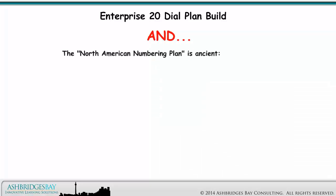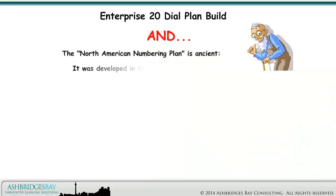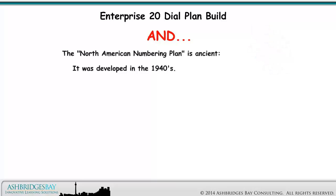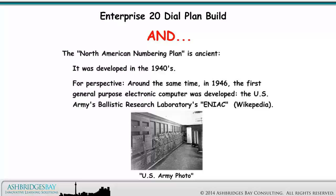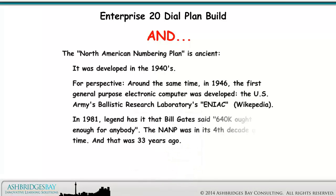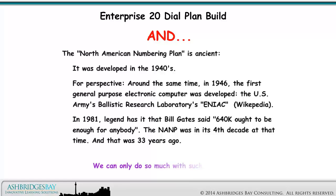The North American Numbering Plan is ancient — it was developed in the 1940s. For perspective, around the same time in 1946, the first general purpose electronic computer was developed: the U.S. Army's Ballistic Research Laboratory's ENIAC. In 1981, legend has it that Bill Gates said 640K ought to be enough for anybody. The NANP was in its fourth decade at that time, and that was 33 years ago. We can only do so much with such old technology.